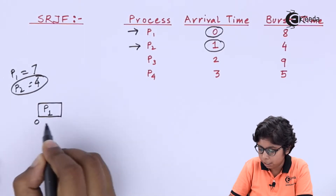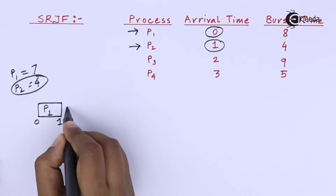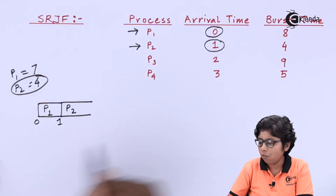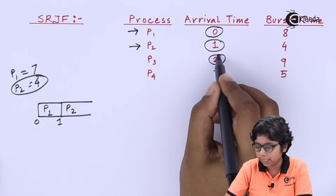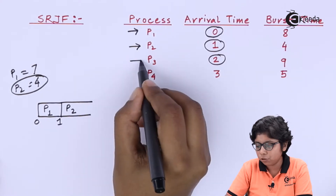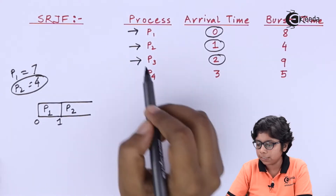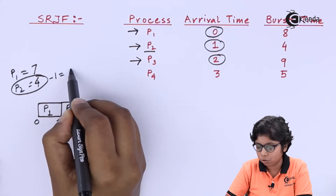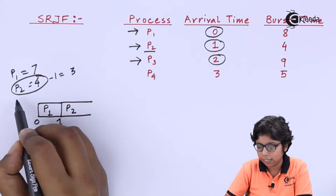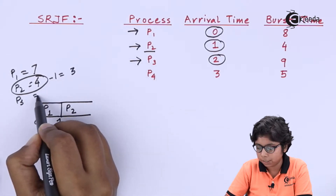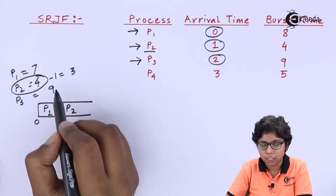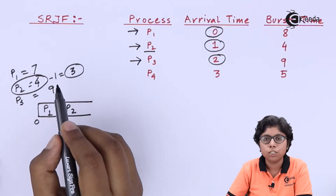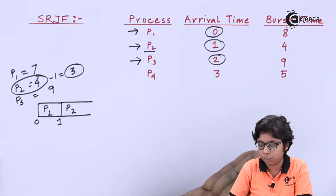At 2ms, P3 arrives. The remaining job time of P2 is 4 minus 1, which is 3ms, and P3 has a burst time of 9ms. Since P2 is clearly shorter, P2 continues its execution.